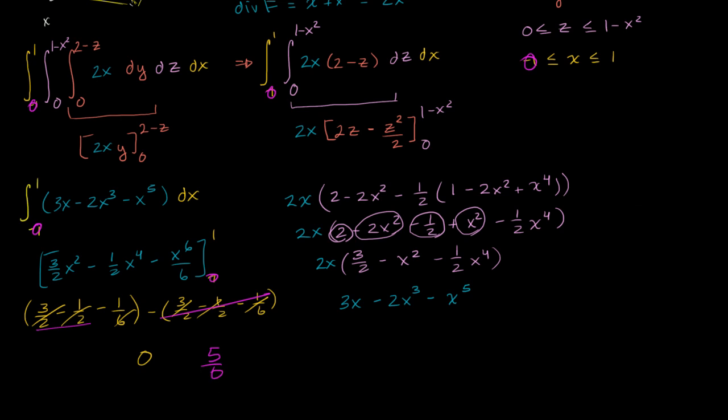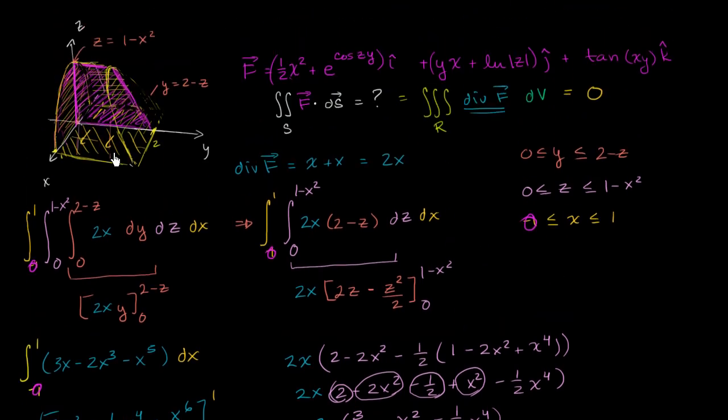And so when you just think about this part of it, this side of it, this one that I've just drawn, you had a positive flux of 5/6. On the other side, you had a negative flux of 5/6, and then they cancelled it out.